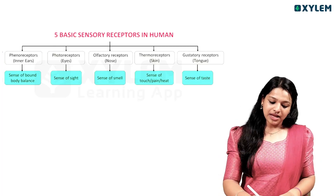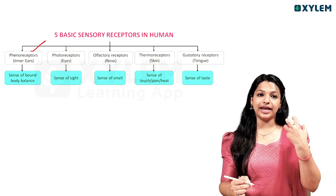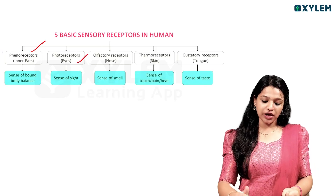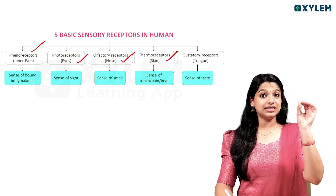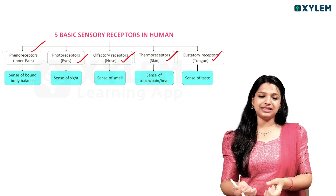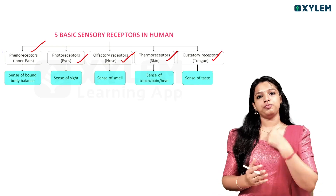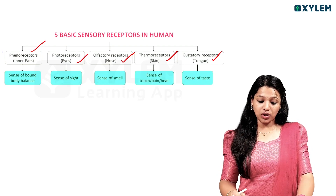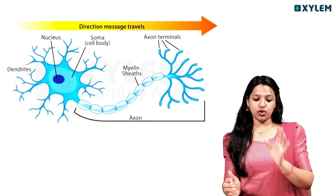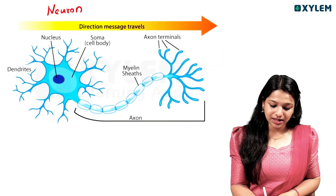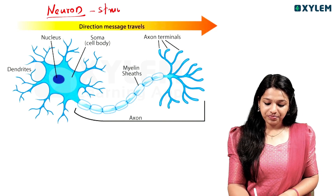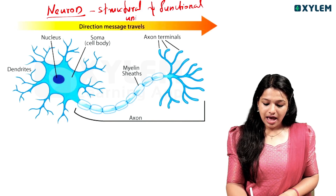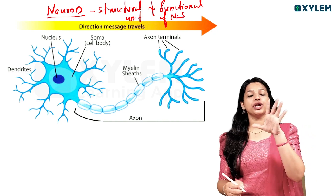We receive phonoreceptors, photoreceptors which receive light, olfactory receptors which receive smell, thermoreceptors which receive taste — but there are different types of receptors. Even as we get the nervous system, the basic unit is the Neuron. In this chapter, we are important to learn the Neuron, the structural and functional unit of the nervous system — we call it Neuron.